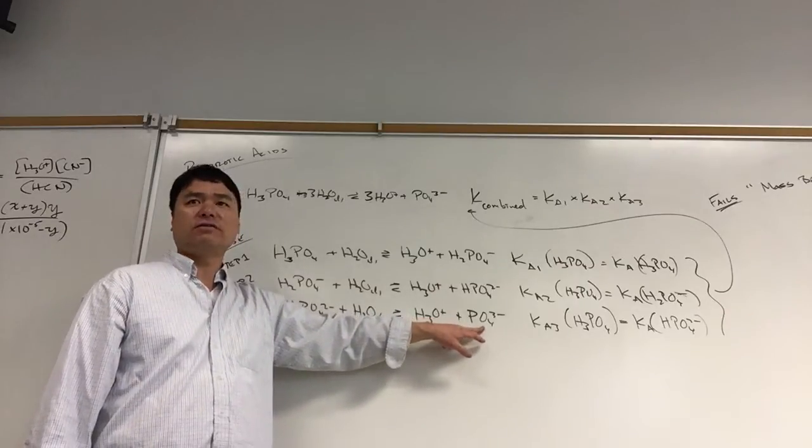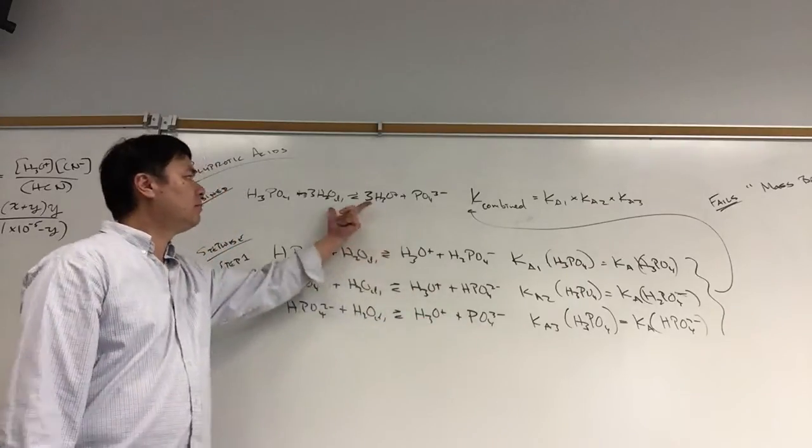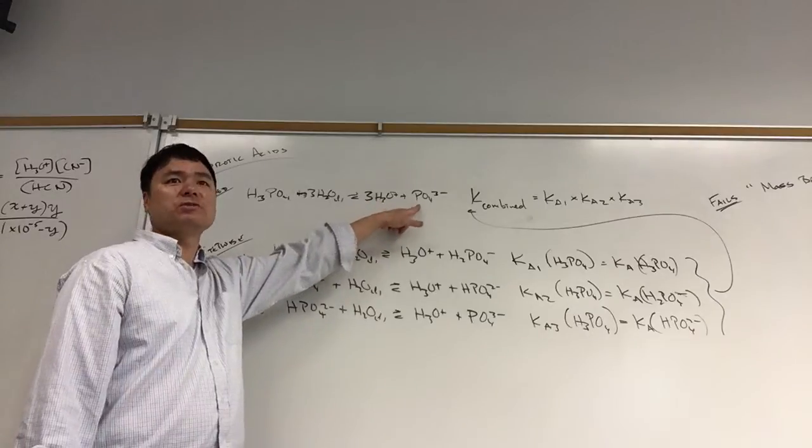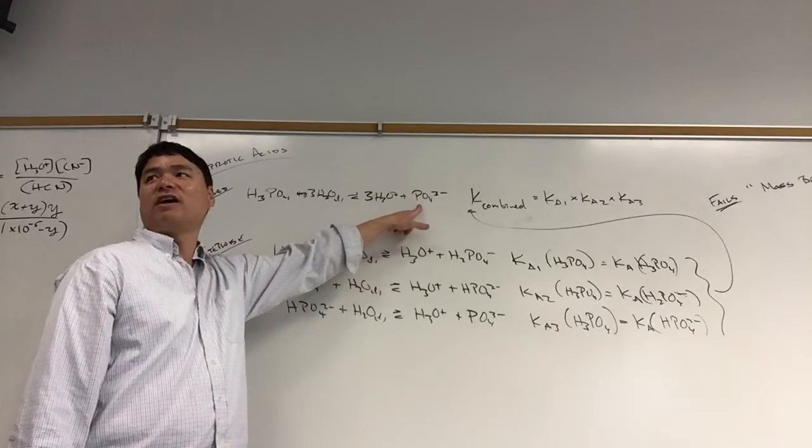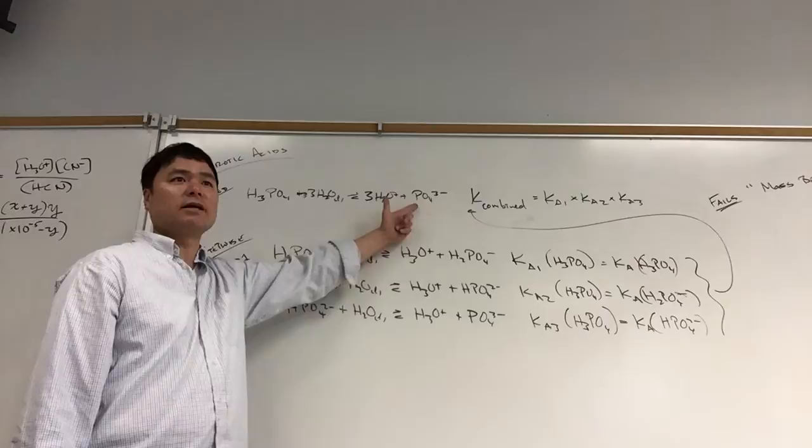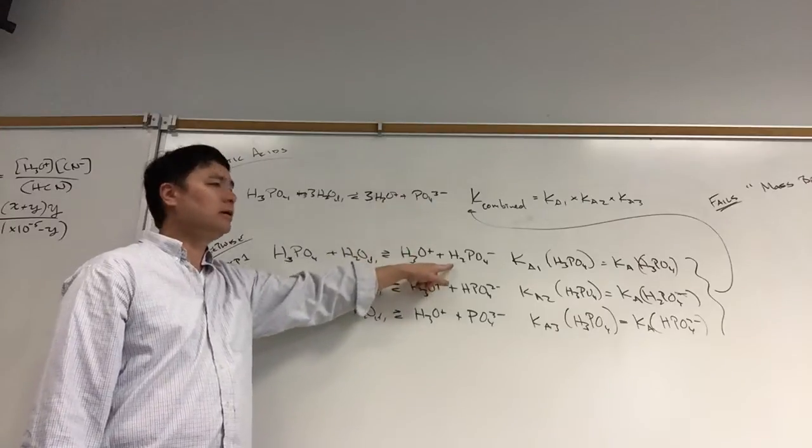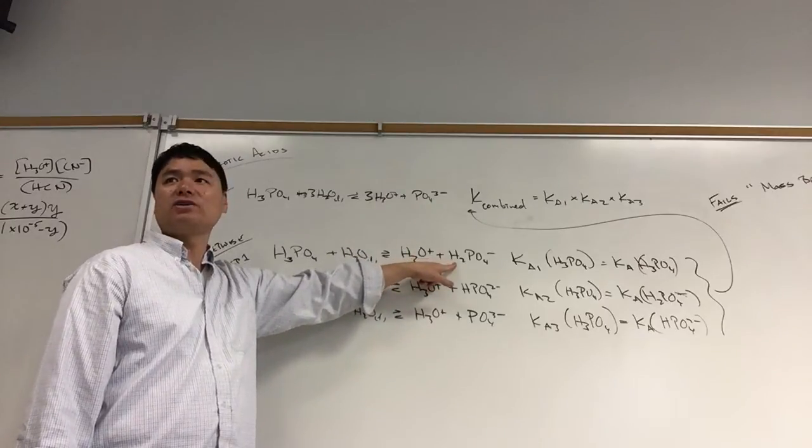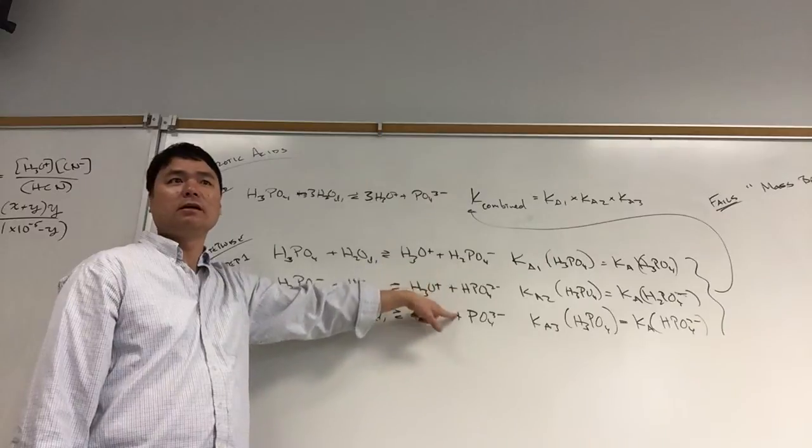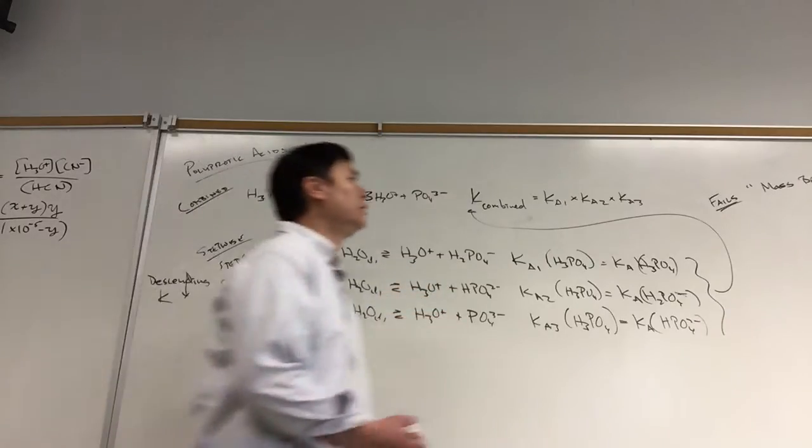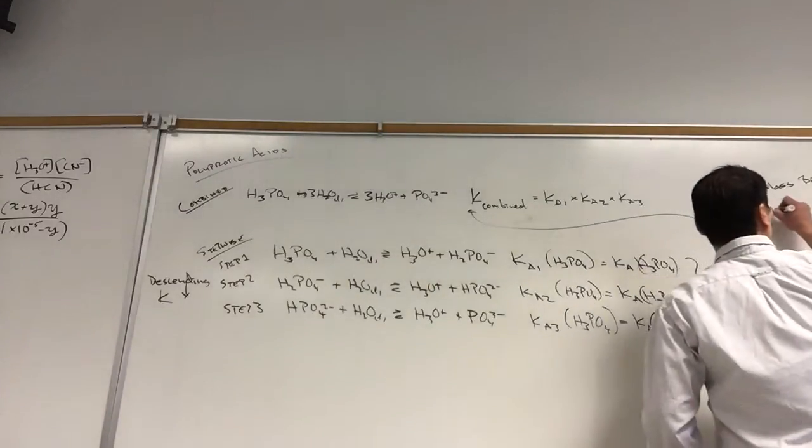When we look at the combined equation, it says that the major species here is phosphate and hydronium. That's not right. We're missing dihydrogen phosphate and we're missing monohydrogen phosphate. So this fails mass balance because we're missing the major species dihydrogen phosphate and monohydrogen phosphate.